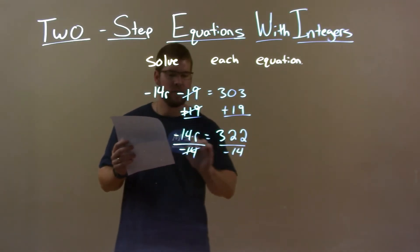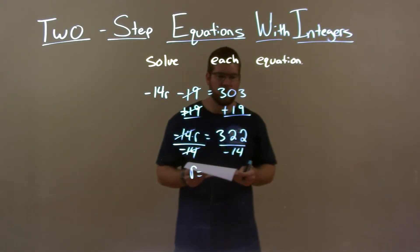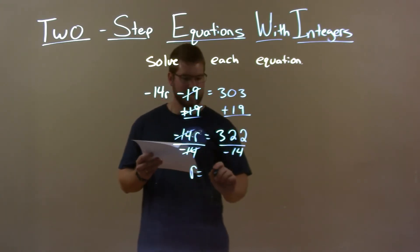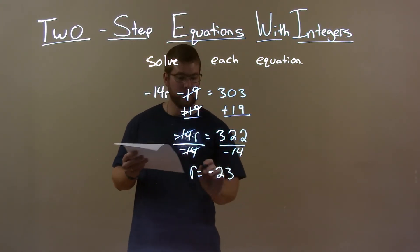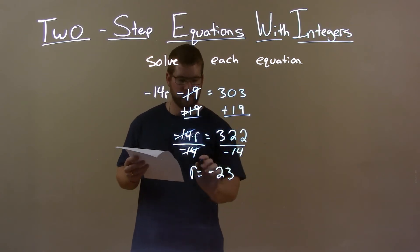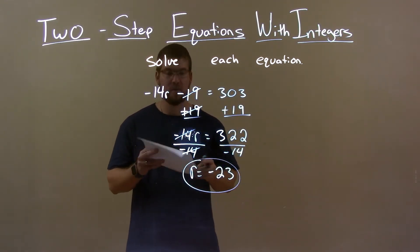And this gives us r by itself on the left. 322 divided by negative 14 is negative 23. Remember, a positive divided by a negative is a negative. So our final answer is r equals negative 23.